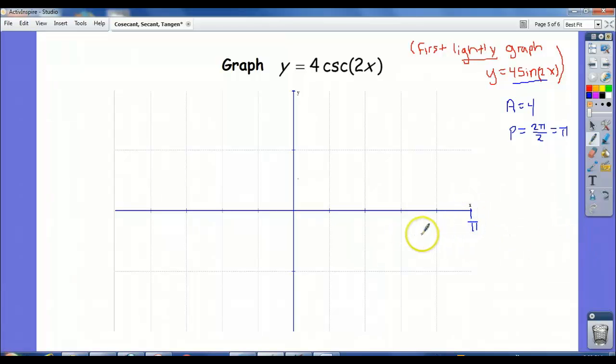Actually, I'm going to make that pi, because when I cut that in half, that would be pi over 2, cut that in half, pi over 4, pi over 4, 2 pi over 4, 3 pi over 4, and then negatives over here.